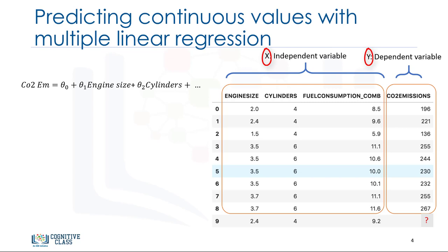For example, you can predict how much CO2 a car might emit due to independent variables such as the car's engine size, number of cylinders, and fuel consumption. Multiple linear regression is very useful because you can examine which variables are significant predictors of the outcome variable. Also, you can find out how each feature impacts the outcome variable.